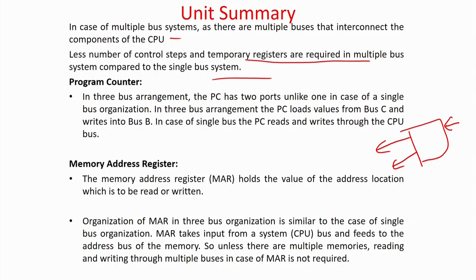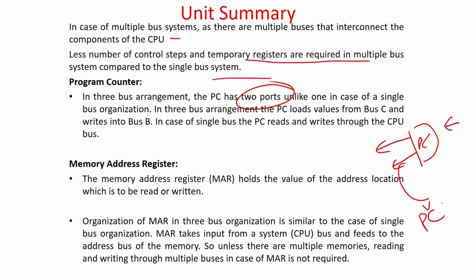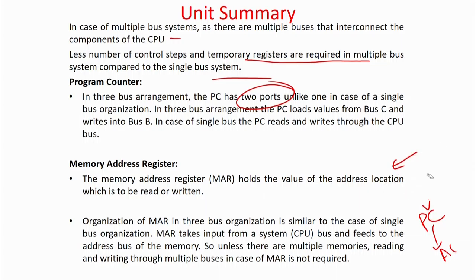One register can give multiple outputs to two different buses, and there will also be one input port. The program counter has two ports. In the three-bus system, the program counter gives its value out while simultaneously the ALU does PC equals PC plus 1. You do not have to wait for the bus to free up and then dump the new value, because there are multiple buses. So in a single stage, you can both send the PC value to the memory address register and update PC to PC plus 1.